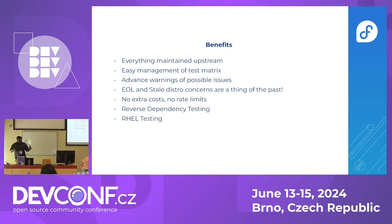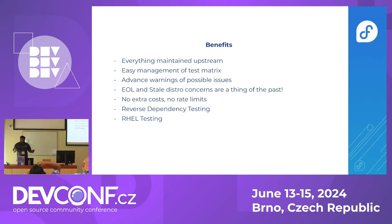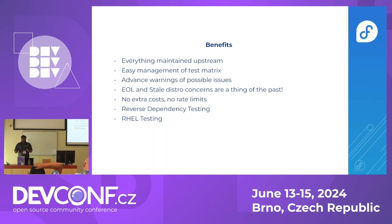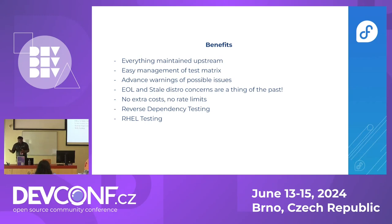Everything is maintained upstream in one place — single source of truth for tests and spec files, and easy management of test matrices. No need to worry about what distros and architectures to build against. Advance warning of possible issues — how changes are going to impact RHEL and CentOS Stream on every PR you make to your upstream repo. No need to worry about release mapping — Packit takes care of that. No extra cost, reverse dependency testing, and RHEL testing.